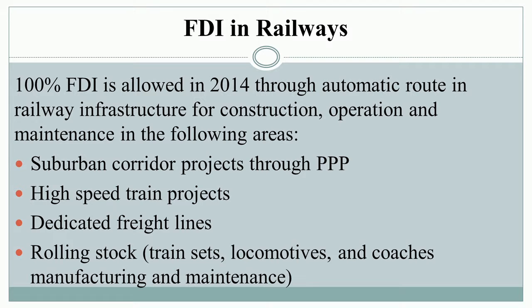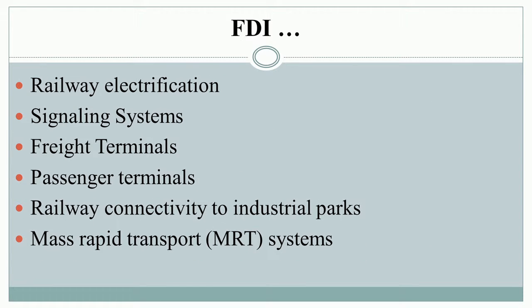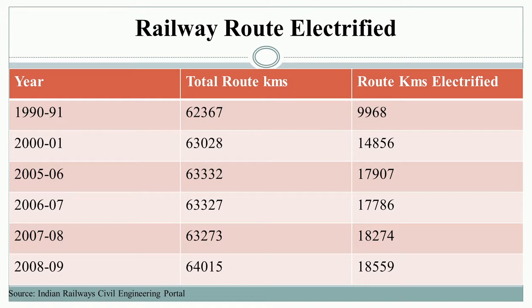100 percent FDI is allowed since 2014 through automatic route in railway infrastructure for construction, operation, and maintenance in areas including suburban corridor projects through PPP, high-speed train projects, dedicated freight lines, and rolling stock — train sets, locomotives and coaches manufacturing and maintenance. Other areas include railway electrification, signalling systems, freight terminals, passenger terminals, railway connectivity to industrial parks, and mass rapid transport systems.